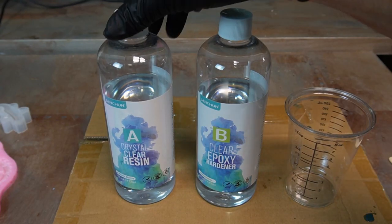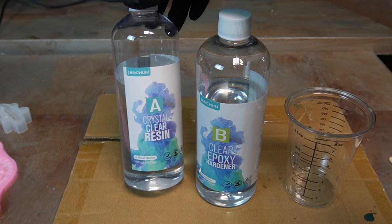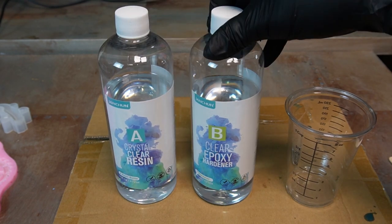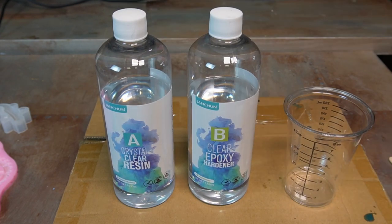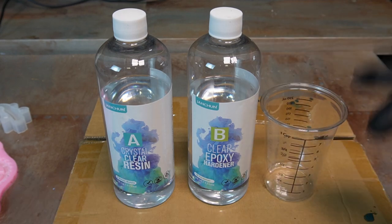Okay, so we've got the Jan Chun crystal clear two-part epoxy resin. Just like most of them, part A, part B. It says mix equal parts so we're going to do that. I've got a little mold over here and then we'll pour it up and see how it does.